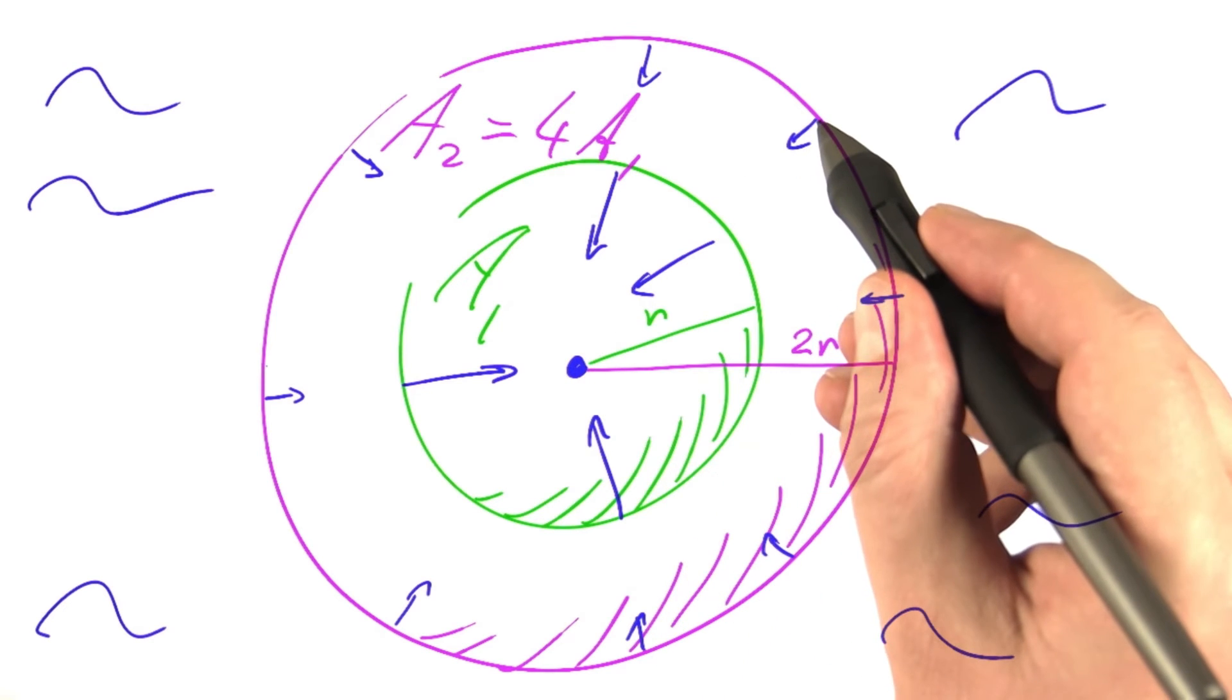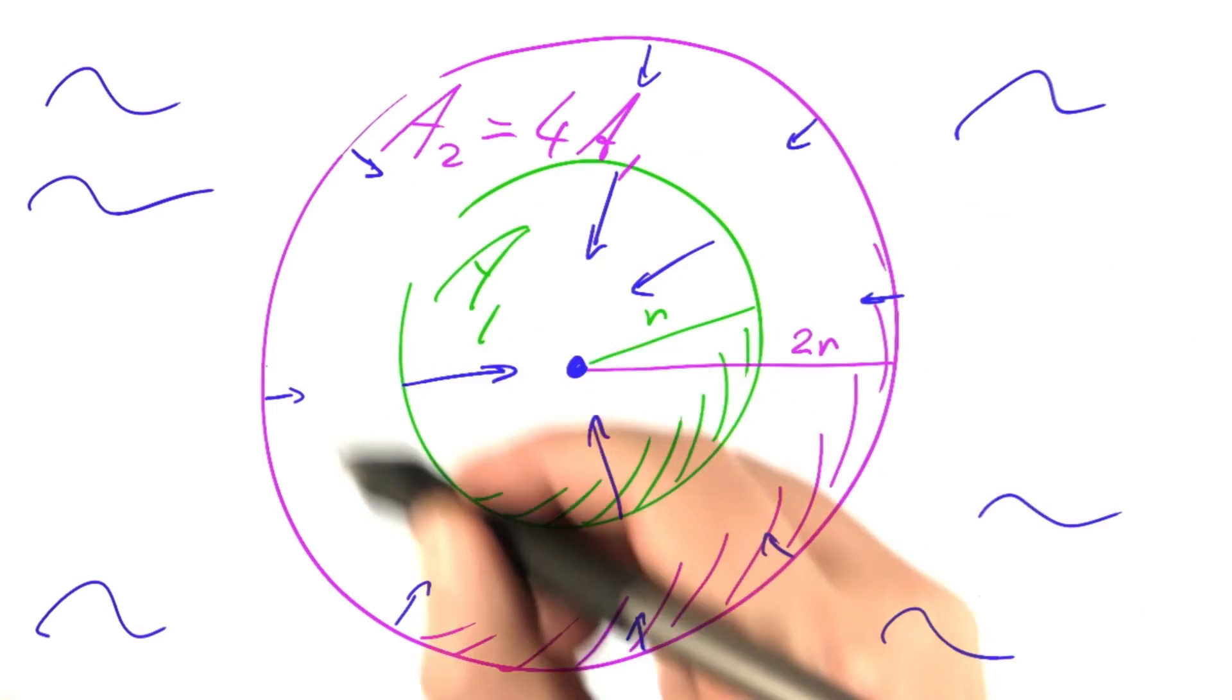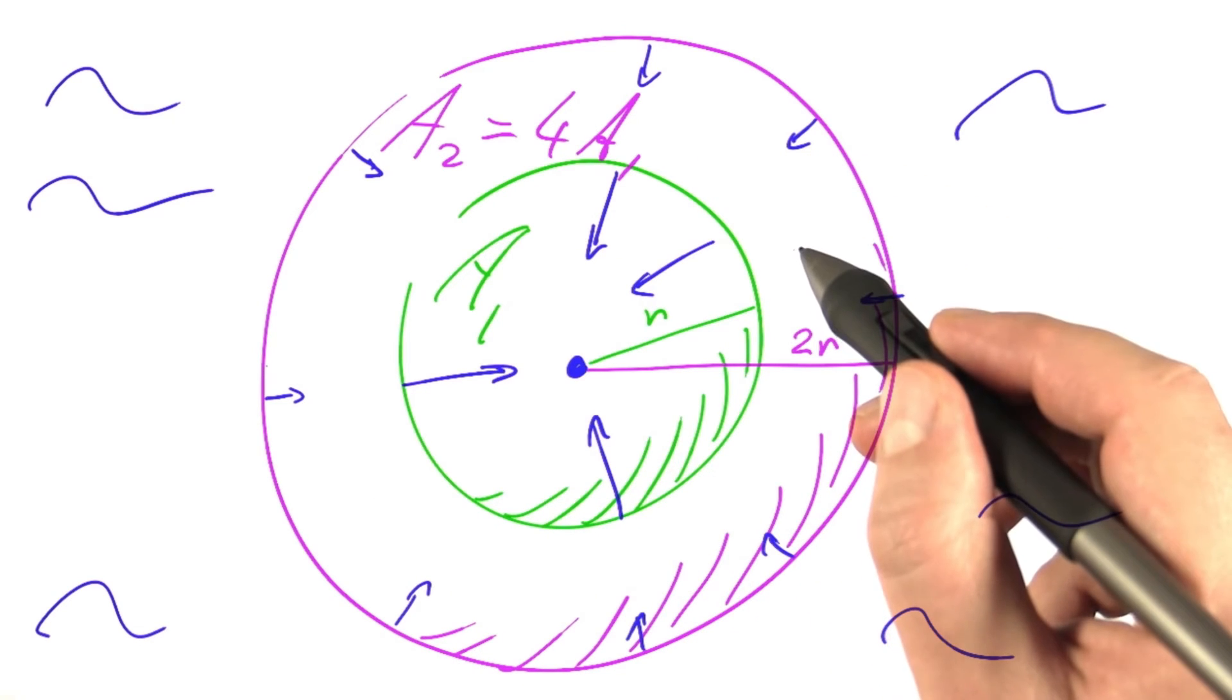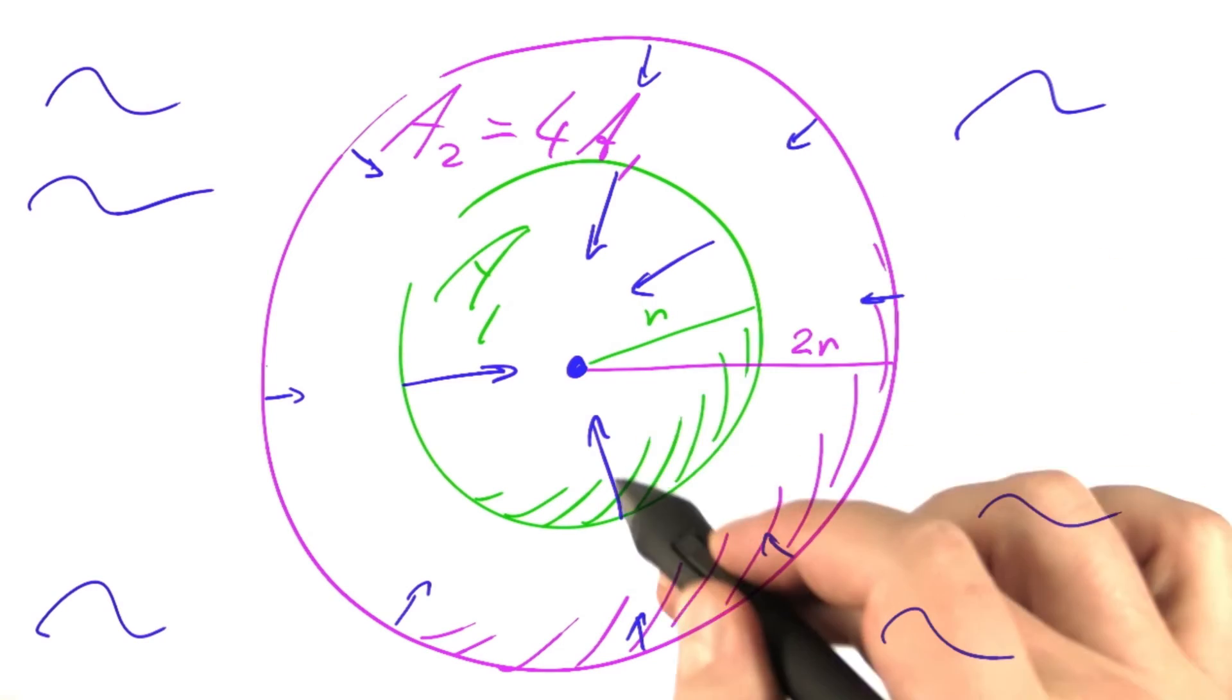Of course, this doesn't only work for a factor of two. This works for all ratios. And hence, we can indeed identify the force field of gravity with the velocity field of water.